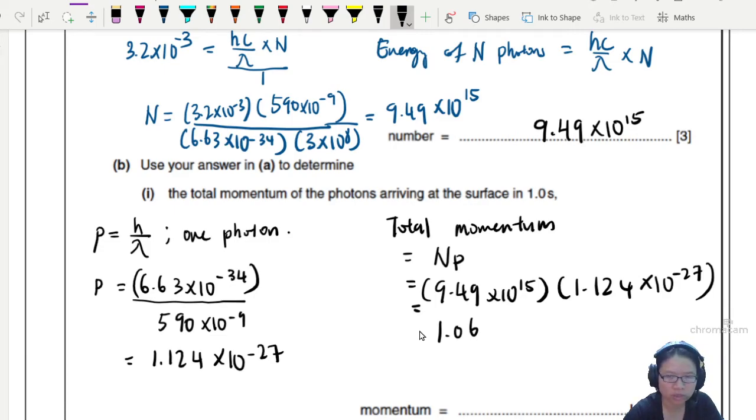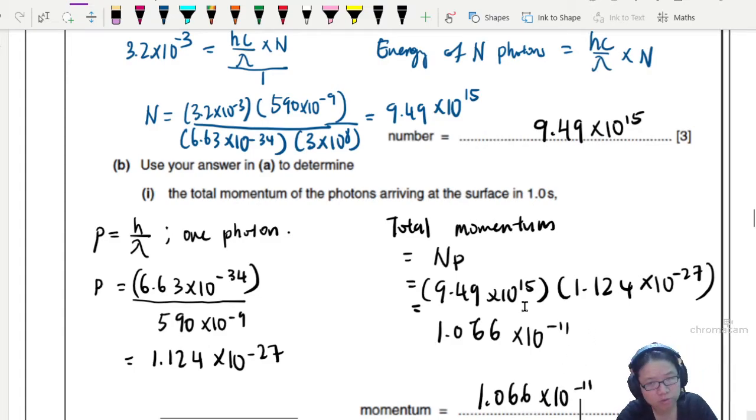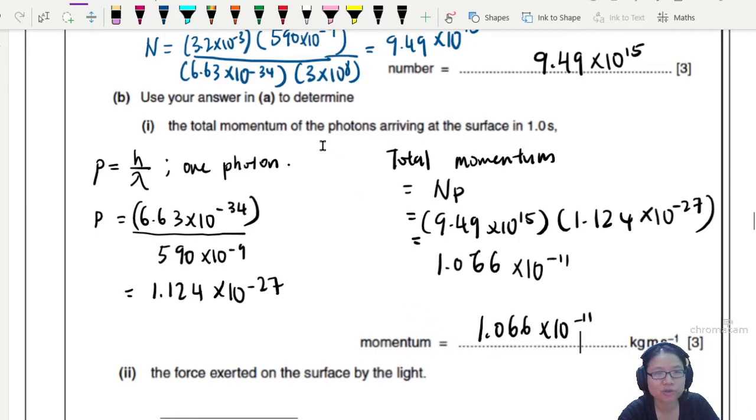So the number is 9.49 times 10 to the power of 15, previously calculated. The momentum is 1.124. Oh wait, this one got prefix. Children, don't be like me. Why never read prefix? So 1.066 times 10 to the power of negative 27. This momentum is supposed to be small because you're talking about the photon arriving. So the photon's momentum is kind of small.